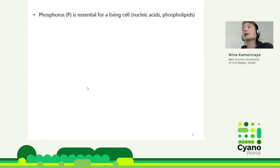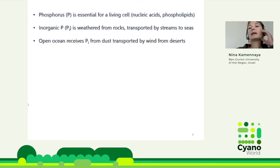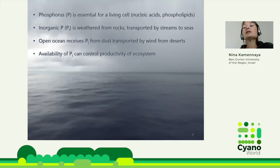Why phosphate? Phosphorus is one of the essential micronutrients for any living organism, because our nucleic acids and our phospholipids all contain phosphorus. Phosphate is the most common inorganic form of phosphorus. It comes from the terrestrial realm, gets weathered from rocks, then transported with streams into the coastal ocean and open ocean. The high seas receive phosphate with aeolian dust from deserts. Availability of phosphate can control productivity of the whole ecosystem.